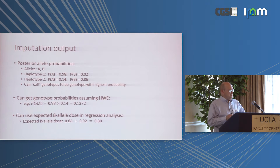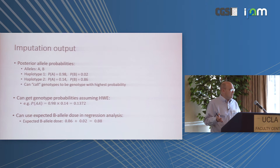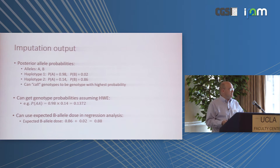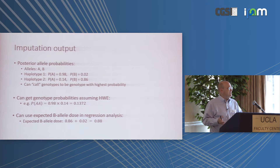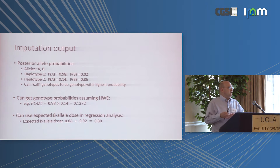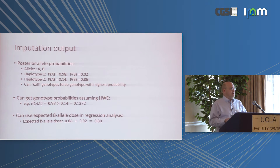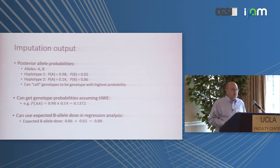All these methods extend to multiallelic markers, but to remove that complexity, we'll assume diallelic markers and refer to the alleles as A and B. My background is with human data, so whenever I refer to physical characteristics of data, I'll be thinking of human data. My apologies to people from an animal background — my examples are from the human domain.